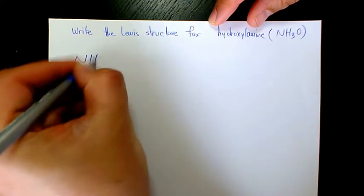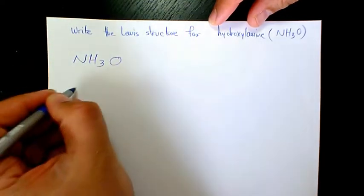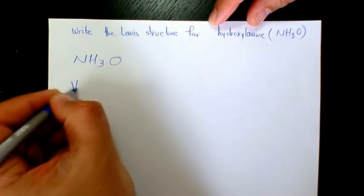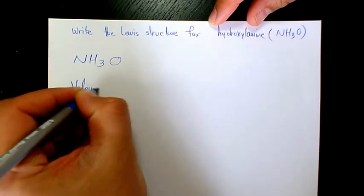So the formula is NH3O. The first thing we need to do, we need to find out the number of valence electrons.